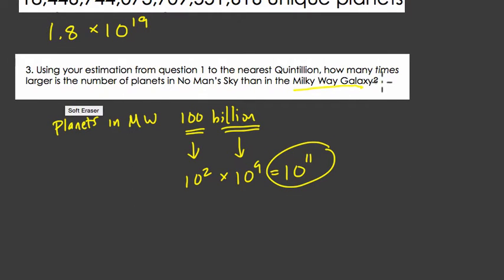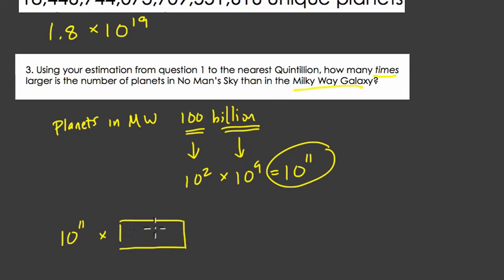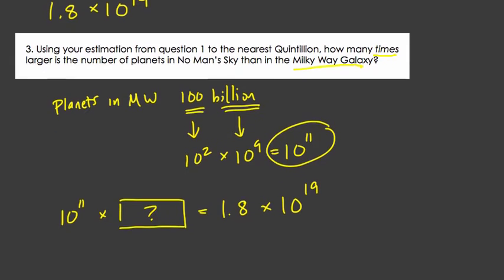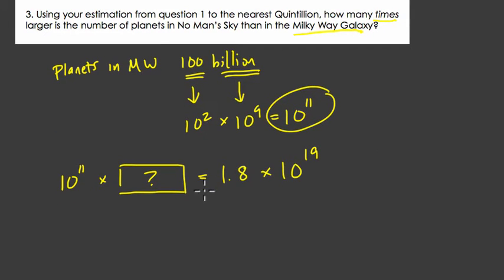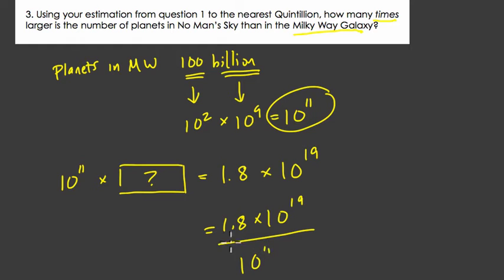How many times larger? That means division. How many times do you have to multiply 10 to the 11th to get 10 to the 19th? We're saying 10 to the 11th times what gets us the number of planets in this video game? And it's amazing, because already we're saying there are more planets in this video game than in our galaxy. So to solve for this, we can divide. To solve for the missing multiplication piece, we get 1.8 times 10 to the 19th divided by 10 to the 11th, and that will equal our missing multiplier — our scale factor.